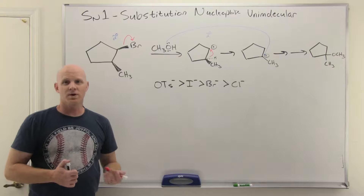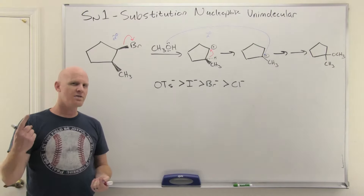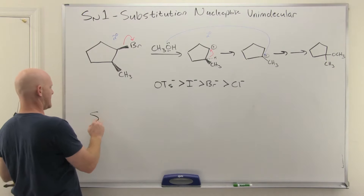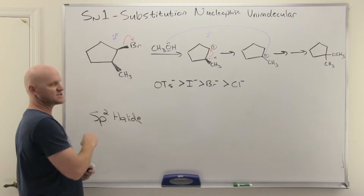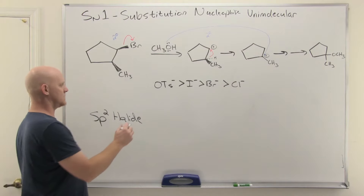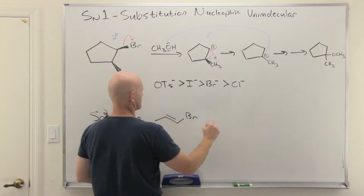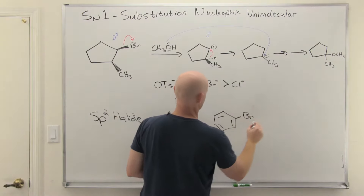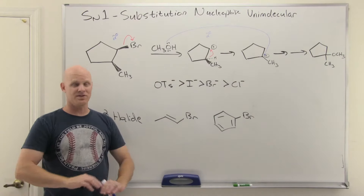We've covered SN1 and SN2 at length, so we're going to do some comparisons between the two, but there's one other kind of halide we should really talk about — what I'm going to call an SP2 halide. So if your halogen is attached to an SP2 hybridized carbon, it turns out you're not doing SN1 or SN2 in that case. Whether you have a vinyl halide or something like this, substitution SN1 and SN2 is not going to happen.